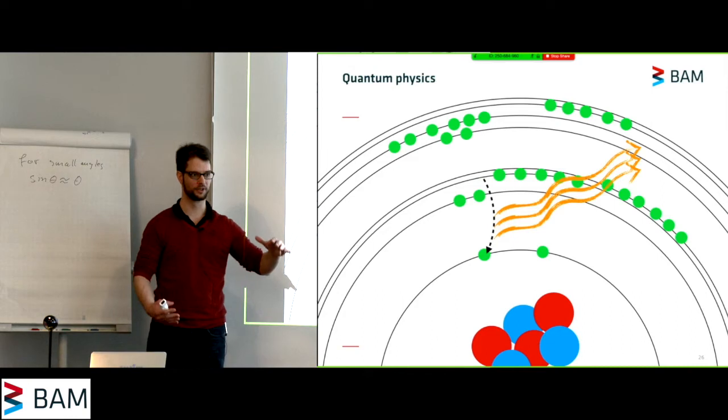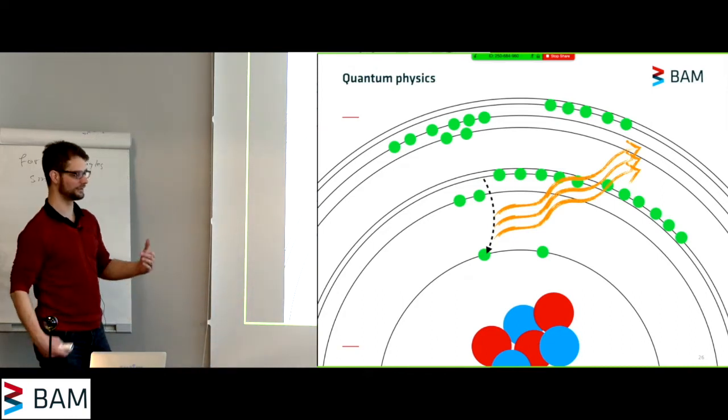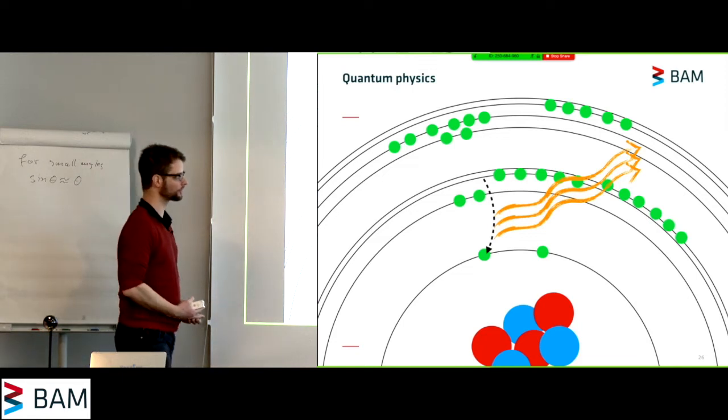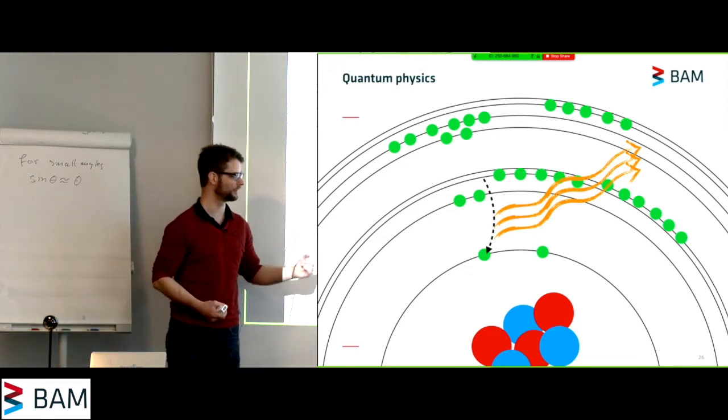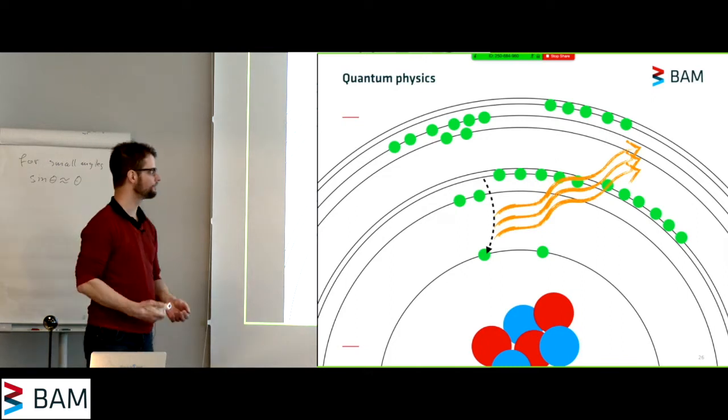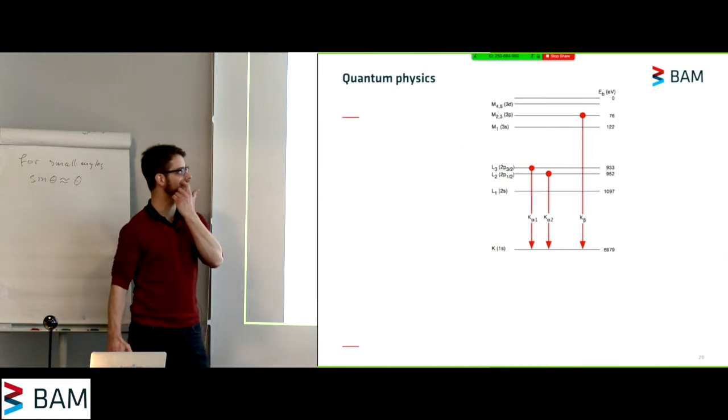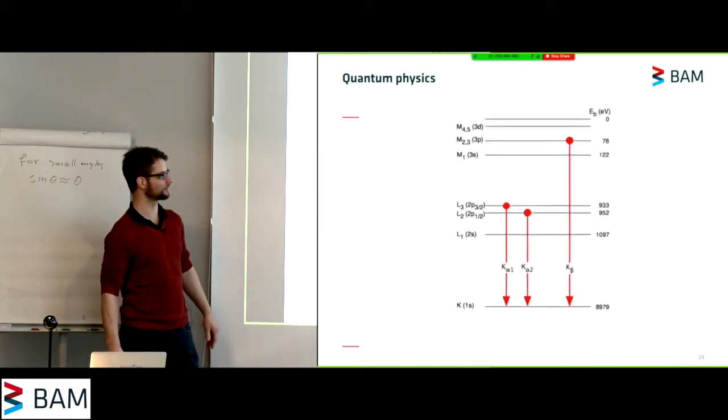Now, not all combinations, not all decays are possible. This depends on the exact orbital and the symmetry with the orbital that it's supposed to go to. But for copper, at least, we have a few of these possible decay processes.